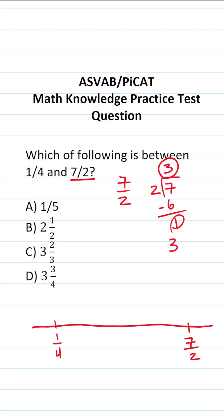This 3 is going to be our whole number. This remainder of 1 is going to be our numerator. This 2 is going to be our denominator. So we can see that 7/2 is the same thing as 3 and 1/2.